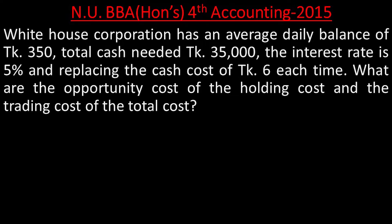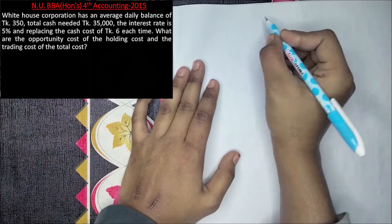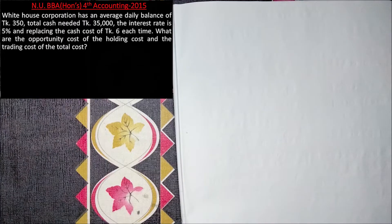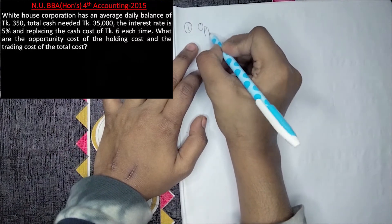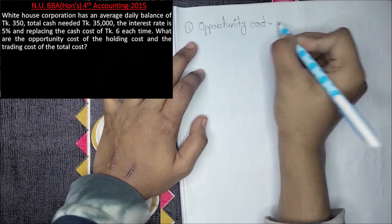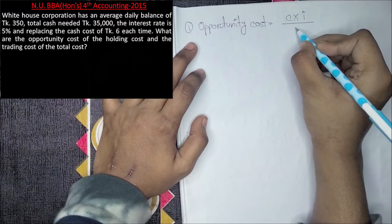What is the opportunity cost, the holding cost? The holding cost of the opportunity is the opportunity cost. The total cost includes the trading cost and the holding cost. Here we have opportunity cost, trading cost, and then the total cost. The opportunity cost formula is C divided by I divided by two.